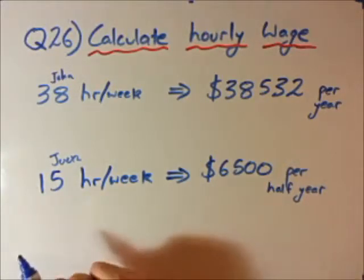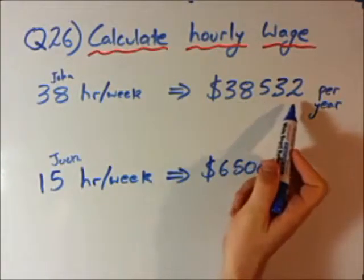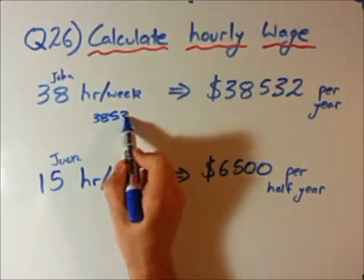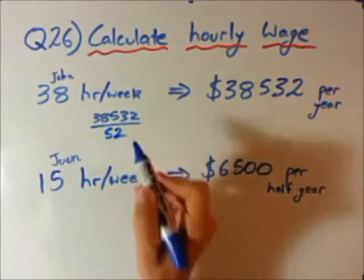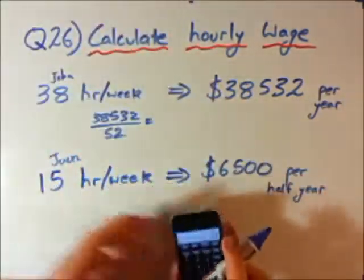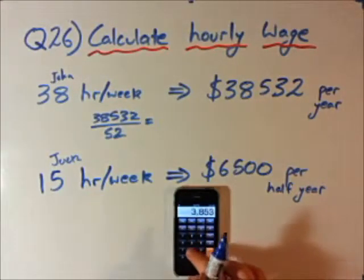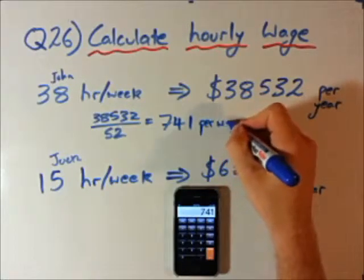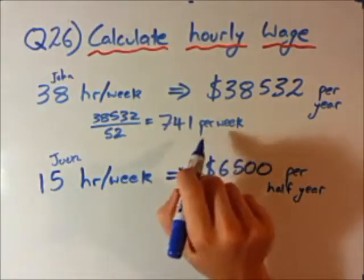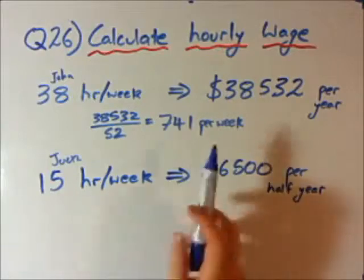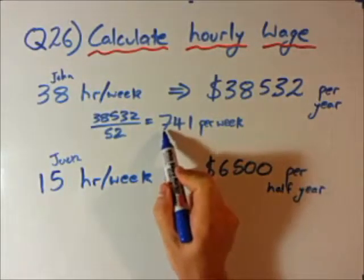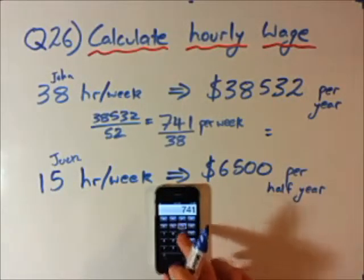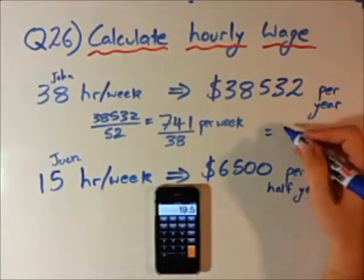To solve it, I take $38,532 per year and divide by 52 weeks to get the weekly wage. Using a calculator: 38,532 divided by 52 gives $741 per week. Now to find the hourly wage, I divide the weekly wage by the 38 hours John works per week. So 741 divided by 38.